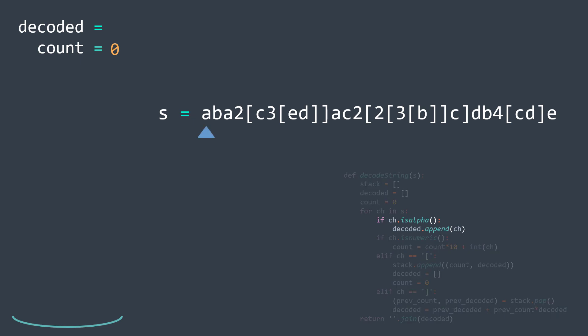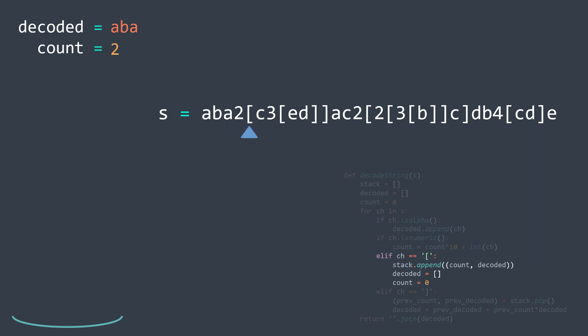Starting the walkthrough: the first character is a letter, we add it to decoded. The next two characters are also letters, we add them. The next character is a number, count becomes 2. The next character is an opening bracket — we store count and decoded in the stack and empty them. The next character is a letter, we add it. The next character is a digit, count becomes 3. The next character is an opening bracket, we store in the stack and empty count and decoded.